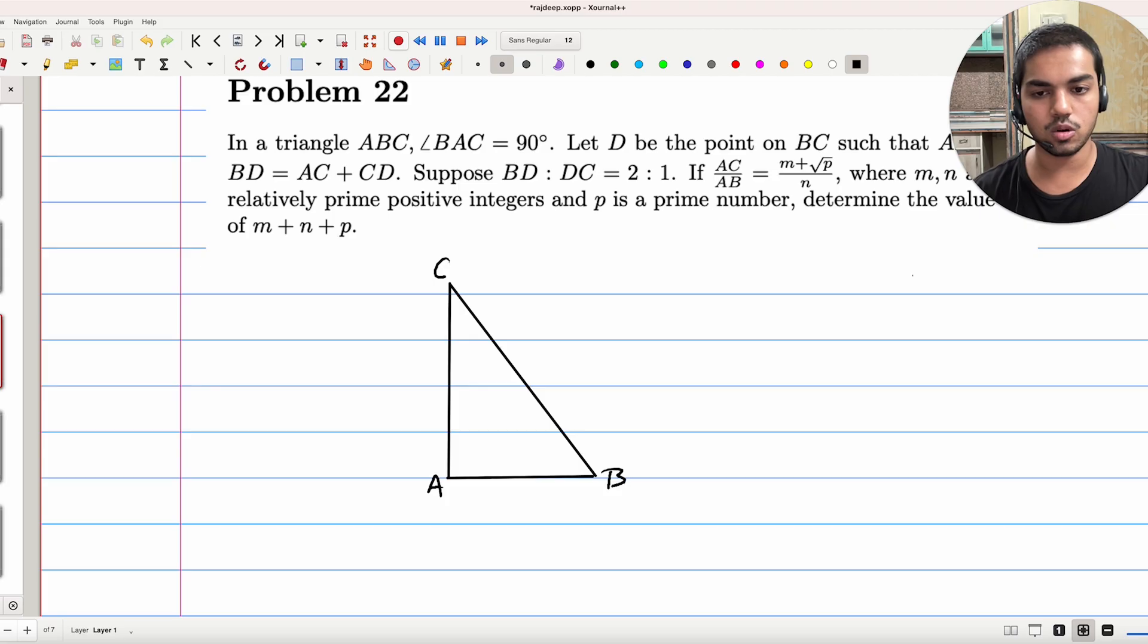I mean, this is just based on what we have drawn here. It's also given that BD to DC is 2 to 1. That's the proportion. And what we have to find is AC by AB. It's given a certain form, and we'll have to find AC by AB in that form and then answer questions based on that.